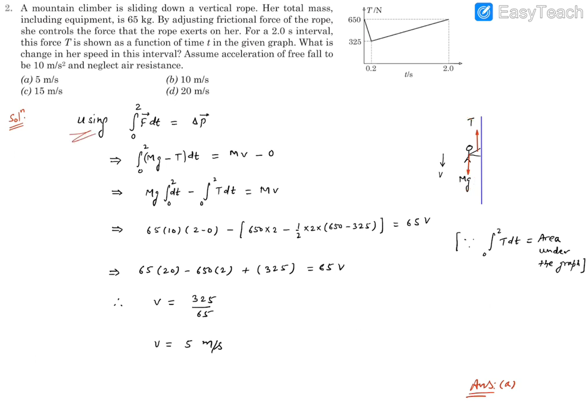Now we can use this relation that change in linear momentum is equal to integration F dt, and we are going to integrate from 0 to 2 seconds so that we can find the change in momentum in this time interval. Now change in momentum means final minus initial. So it starts from 0 velocity, so initial momentum is 0, final is going to be mV.